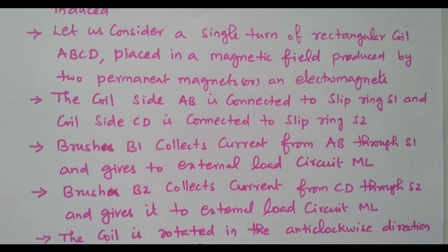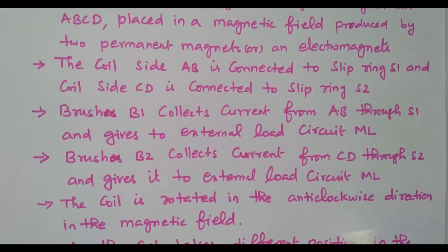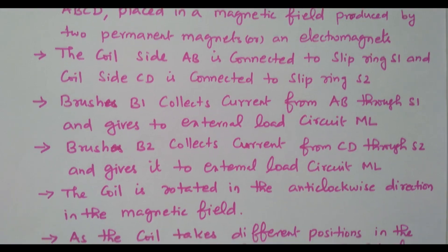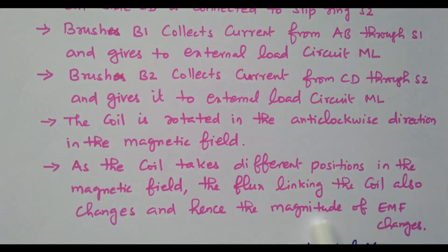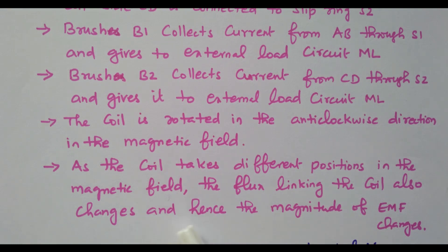As the coil takes different positions in the magnetic field, the flux linking the coil also changes. Hence, the magnitude of EMF also changes. As we rotate the coil, different positions are available, so the flux changes. Due to the rate of change of flux, the EMF also changes.